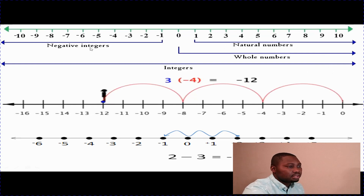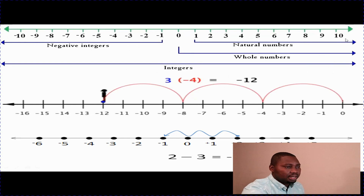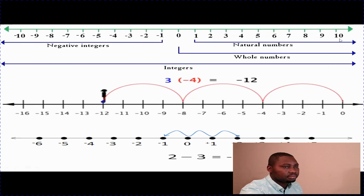The negative side of the number line is the same as the opposite of the positive side. That is, every number on the negative side is just the exact opposite of each number on the positive side. Zero is the starting point.